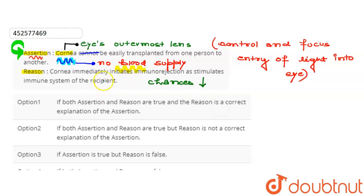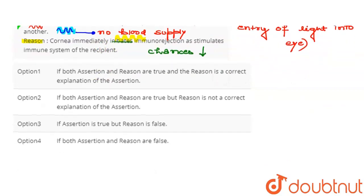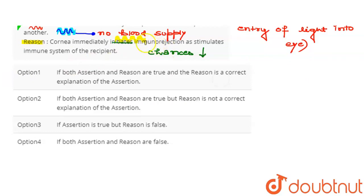The first option is: both assertion and reason are true, and reason is the correct explanation of assertion. This option is wrong because both assertion and reason are incorrect.